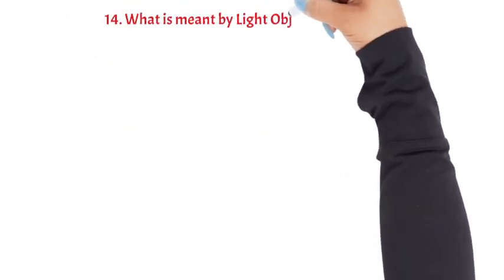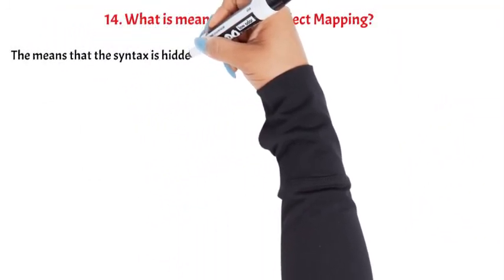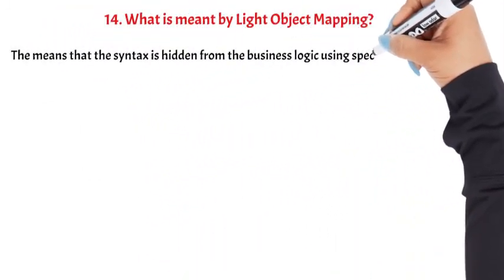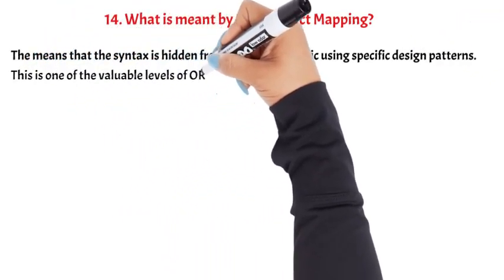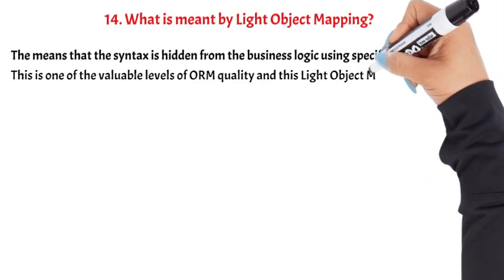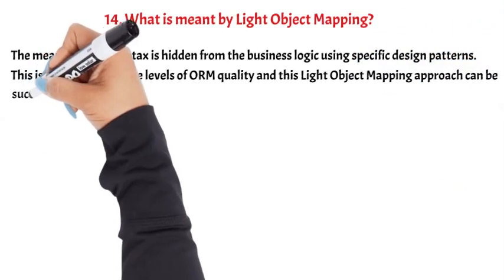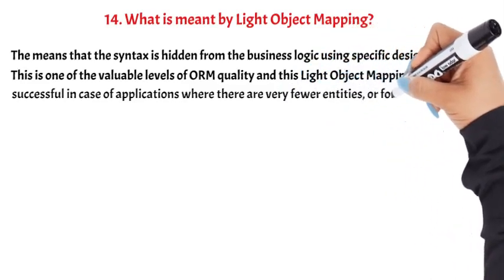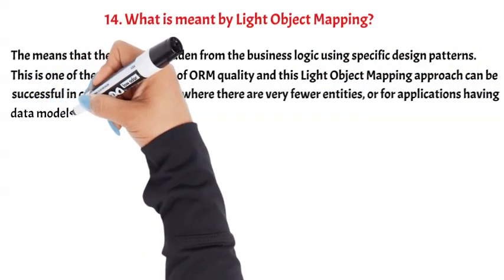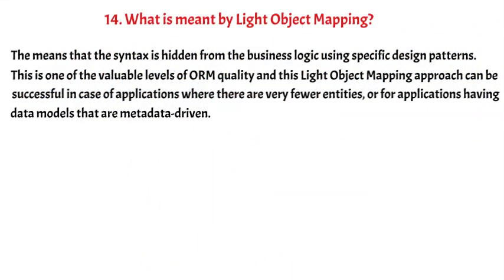Question 14: What is meant by light object mapping? It means that the syntax is hidden from the business logic using specific design patterns. This is one of the valuable levels of ORM quality, and this light object mapping approach can be successful in case of applications where there are very few entities, or for applications having data models that are metadata-driven. This is the end of our Hibernate interview questions. We hope you enjoyed learning with YQ Academy. Until next time, goodbye.